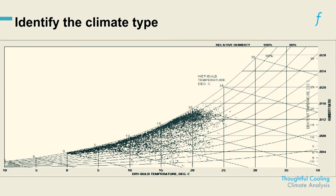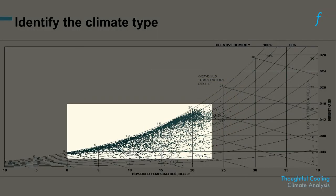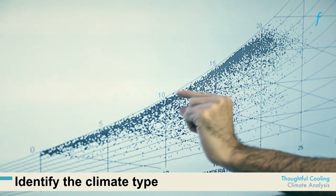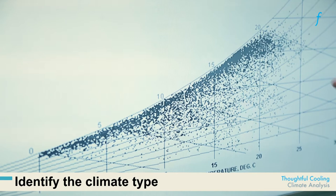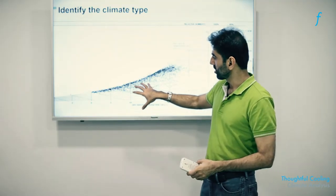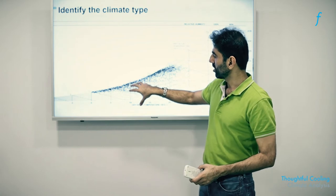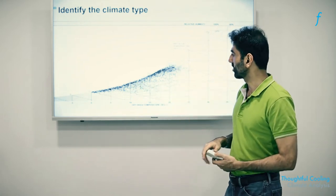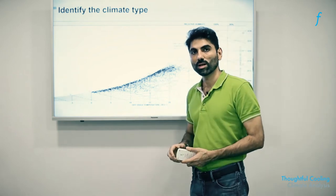This one here of course shows that the temperature regime is much colder than the previous two psychrometric charts. However, the humidity is still on the higher side as you can see a lot of clustering. We might be able to call this what's called a cold and humid climate zone. So this could be something like a place near Himachal Pradesh in Simla, which has overcast conditions at most times of the year but also is relatively cold.